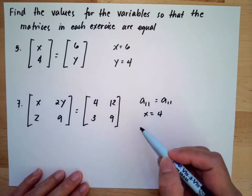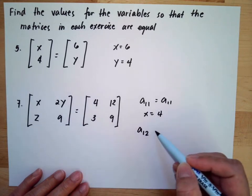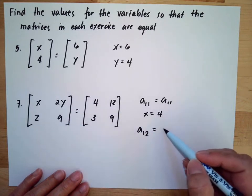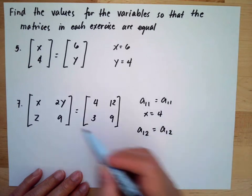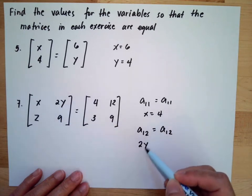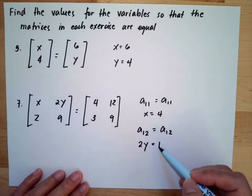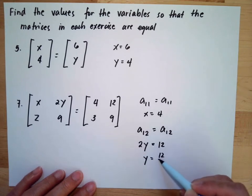Then here the row one column two should be equal to row one column two, which is 2y is equal to twelve, so meaning y is equal to twelve divided by two, so this will be equal to six.